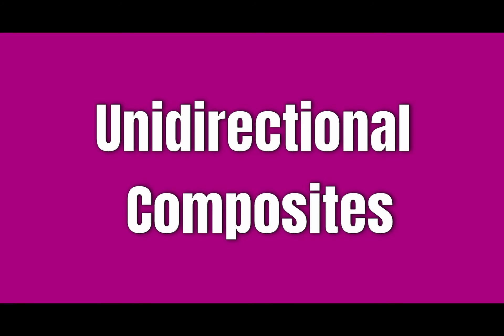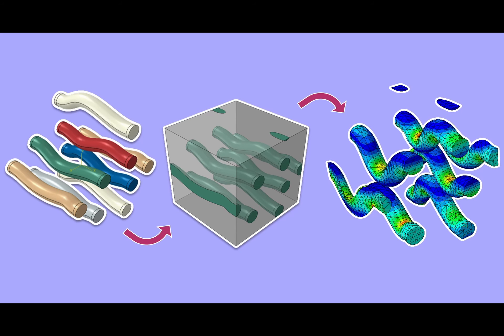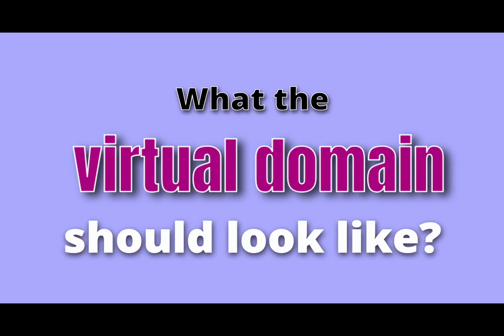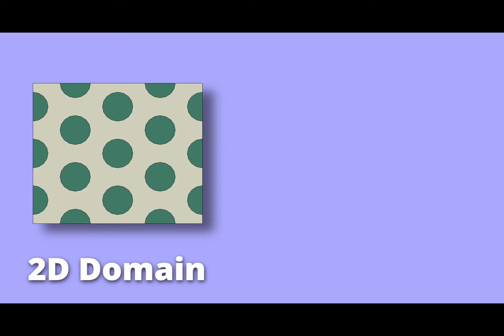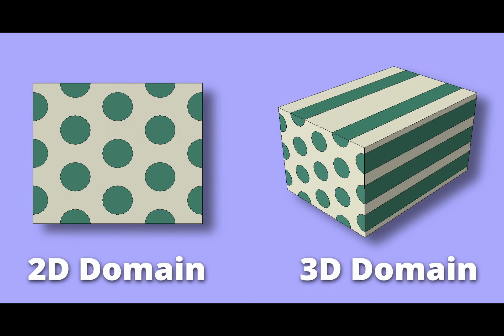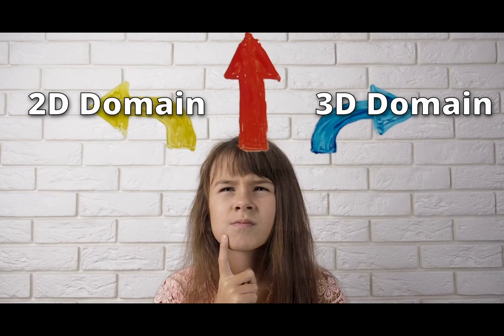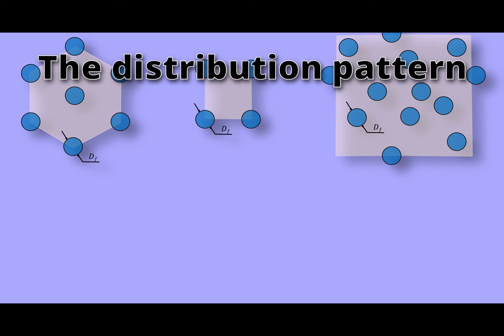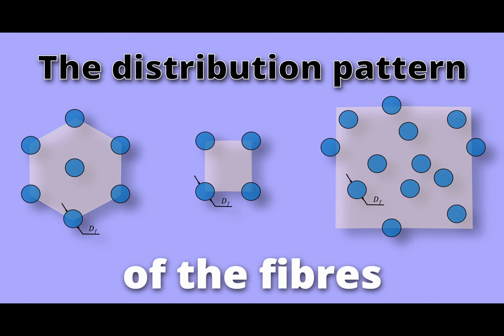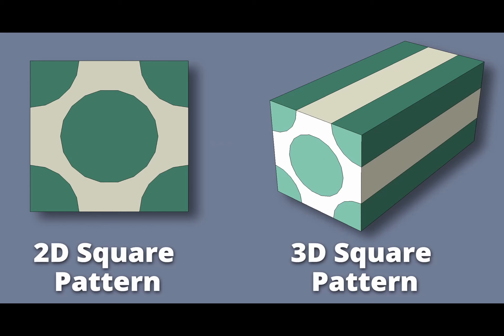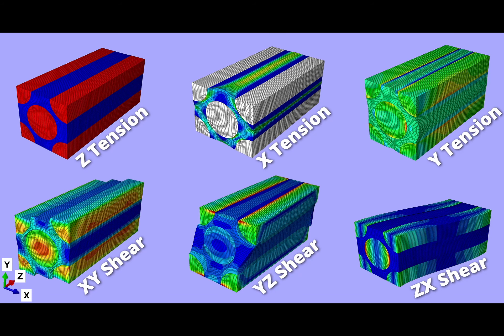When we decide to model unidirectional composites, the first thing we need to consider is what the virtual domain should look like. You may decide to model it with either a 2D or 3D domain. But whatever the dimension you choose, one critical issue that you must consider is the distribution pattern of the fibers within the matrix medium. I will show you how to undertake unit cell modeling of UD composites with a square arrangement of fibers and show results for three sets of uniaxial and shear load cases.